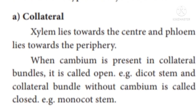When cambium is present in the collateral bundles, it is called open collateral. The dicot stem is an example of open collateral. If there is no cambium, it is called closed collateral — that is the monocot stem. For example, dicot stem is open collateral and monocot stem is closed collateral.